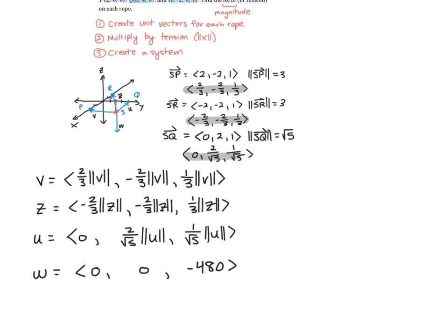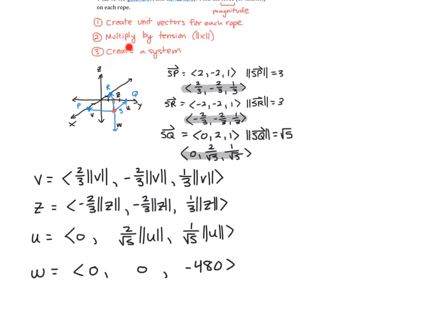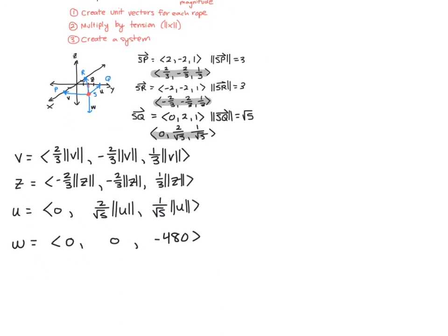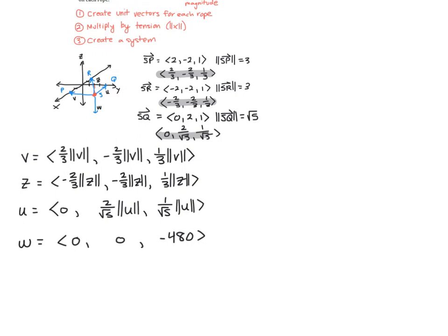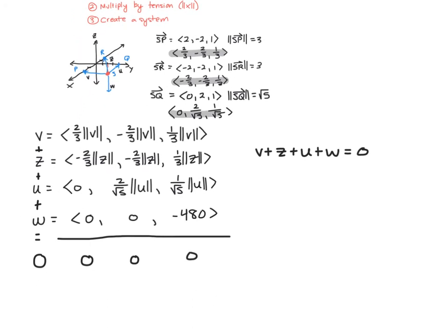Now we set up our system of equations. This ties into a physics concept: if an object is stationary with multiple vectors acting on it, the sum of all vectors equals zero. The weight isn't moving up or down — it's stationary — so V + Z + U + W = 0.